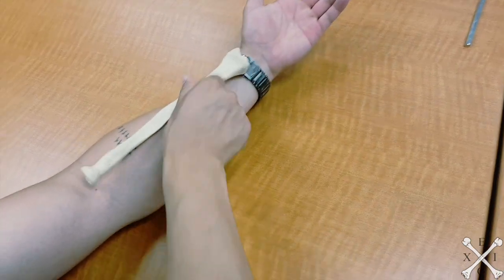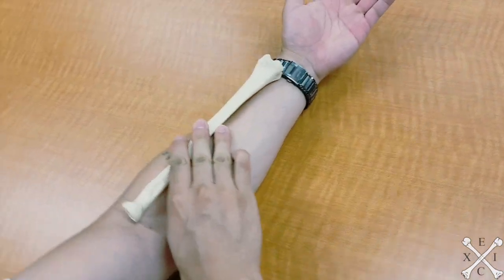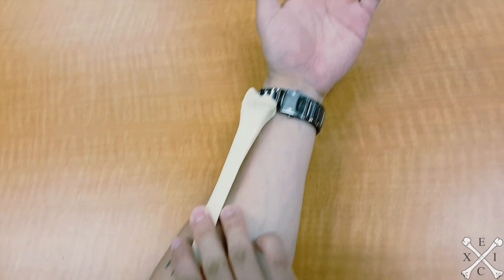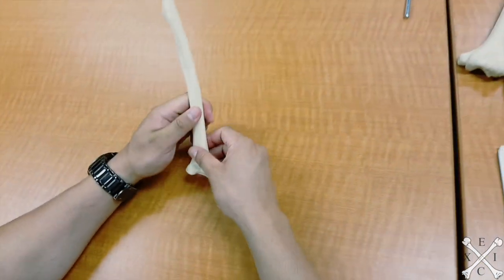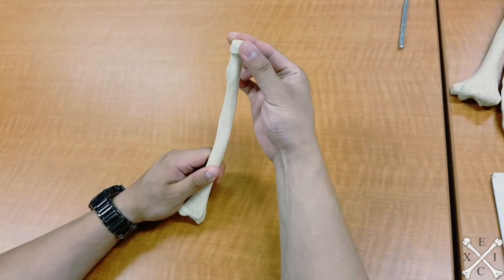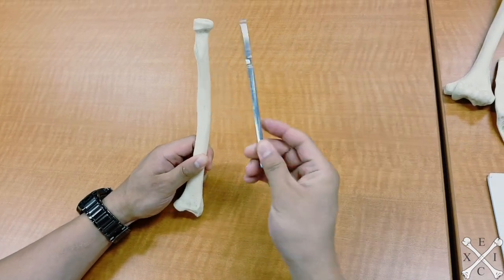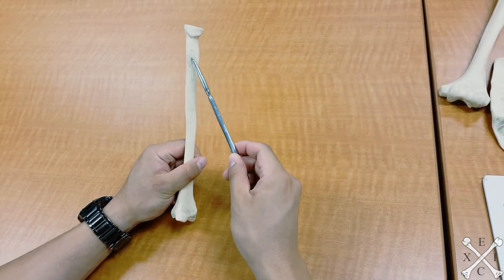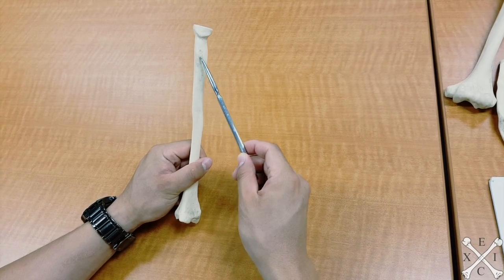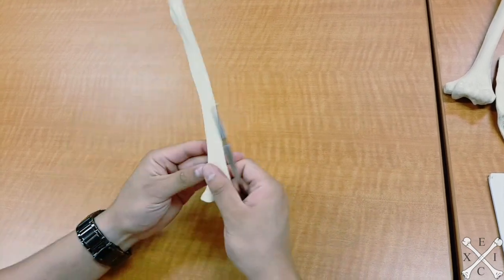So on you it sits like this. Now this is the head of the radius, this is the neck of the radius right here, this is your radial tuberosity, and then we have the shaft of the radius.